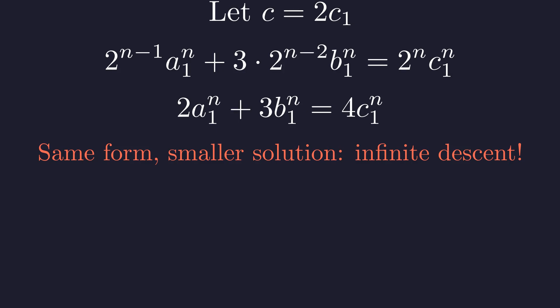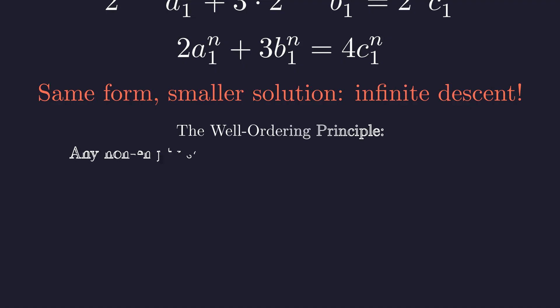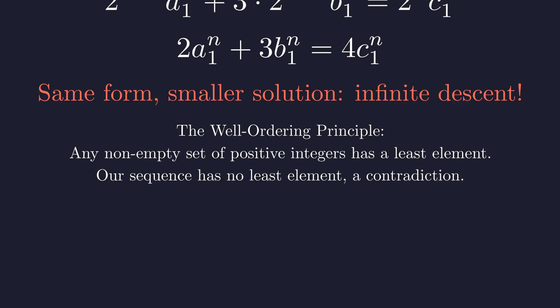But hold on—why is that impossible? Couldn't we have a sequence of numbers that just get smaller and smaller, like one half, one quarter, one eighth, and so on forever? That's a great question, but it confuses fractions with integers. The set of positive integers has a fundamental property called the well-ordering principle: any collection of positive integers must have a smallest member. Our infinite descent would create a set with no smallest element, which is impossible. Therefore, our initial assumption of a solution must be wrong.